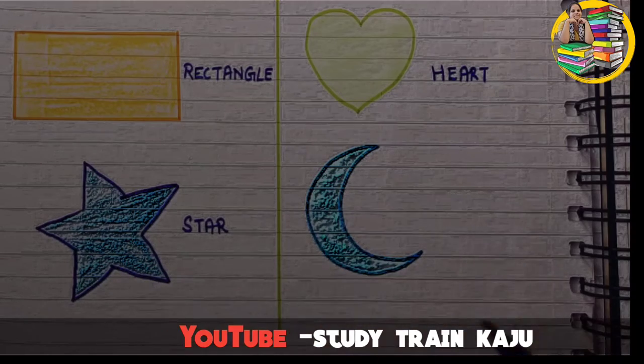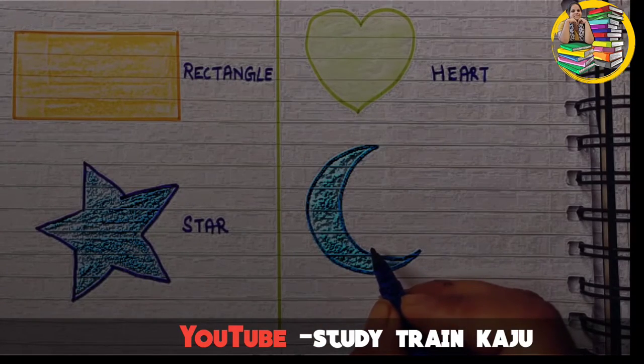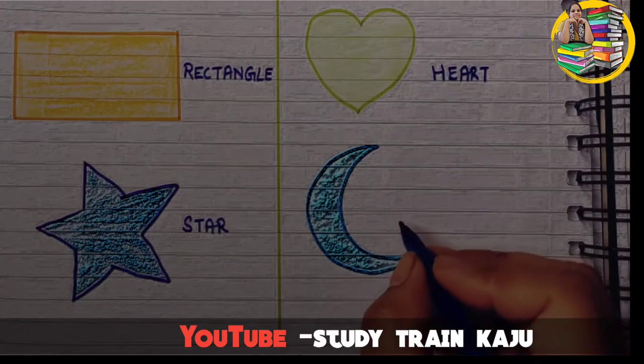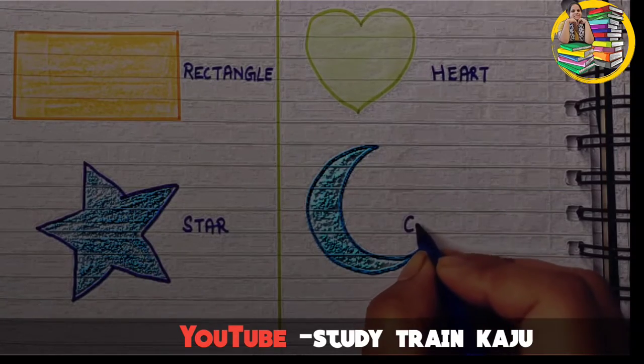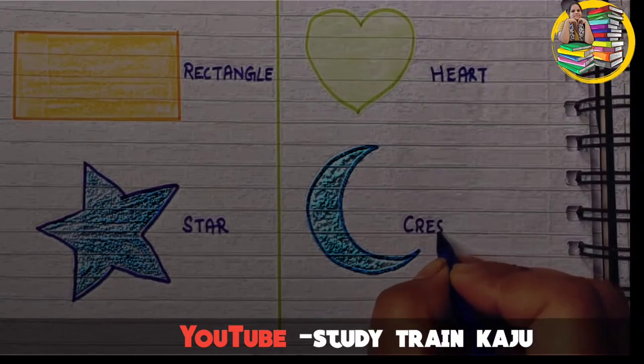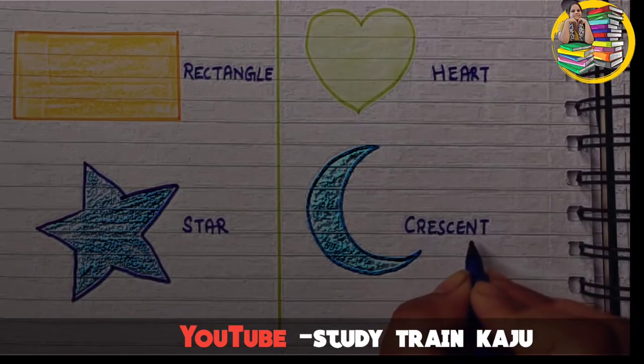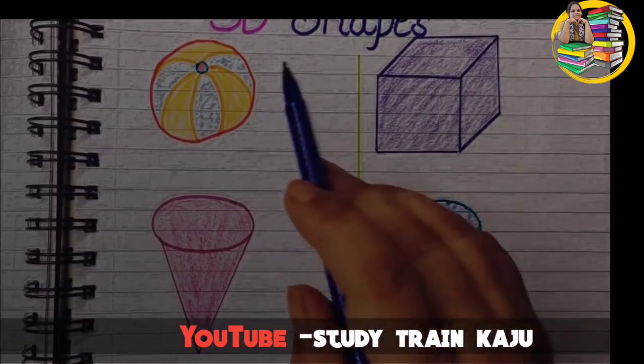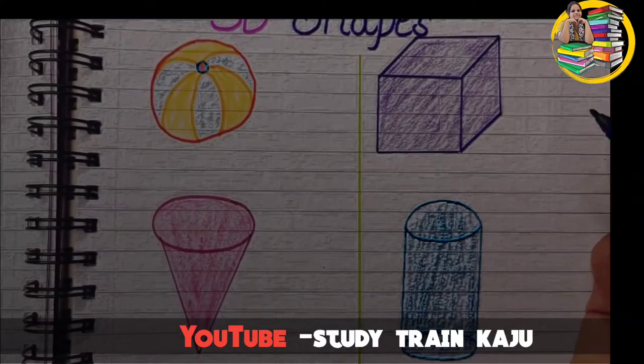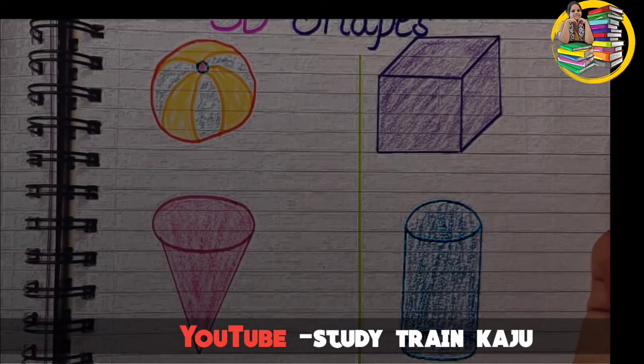The next shape is crescent shape. C-R-E-S-C-E-N-T. Crescent. Now, let us see a few 3D shapes. 3D means three-dimensional.